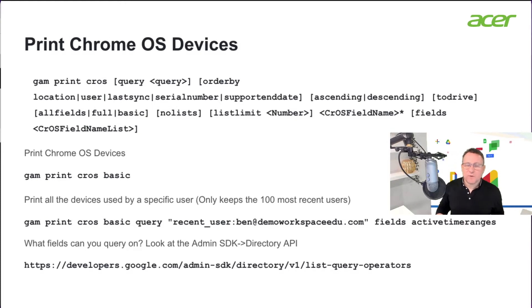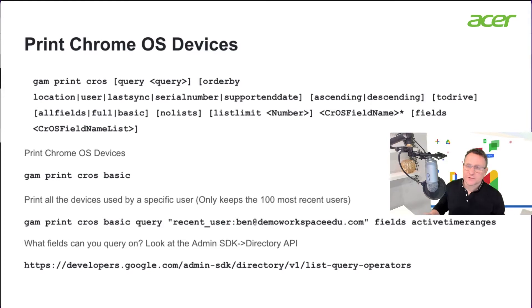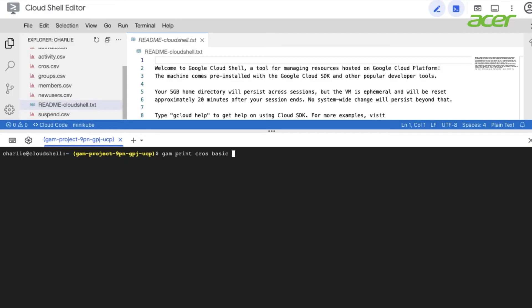A straightforward command would be `gam print cros basic`. This will list out all of your devices with a very basic listing.